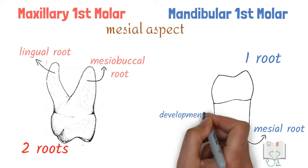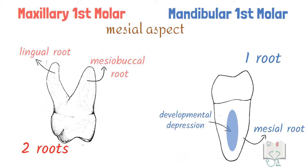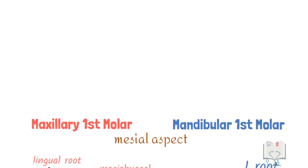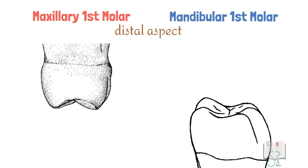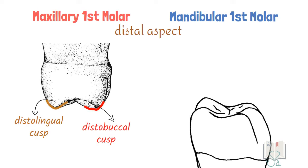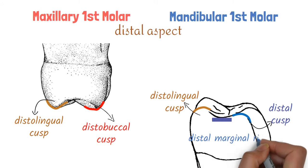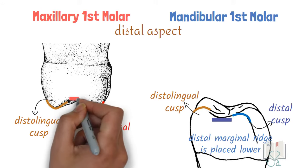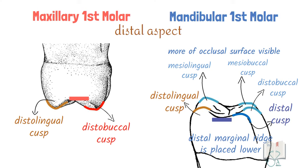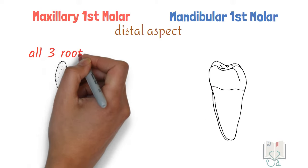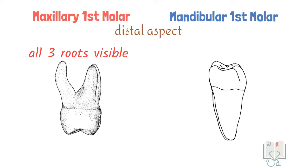In mandibular first molar, a developmental depression is visible on the mesial root, not present in maxillary first molar. Next, the distal aspect. In maxillary first molar, two cusps are visible: the distobuccal cusp and distolingual cusp, whereas in mandibular first molar the two cusps in front are the distolingual cusp and distal cusp. Moreover, in mandibular first molar, since the distal marginal ridge is placed lower, more of the occlusal surface is visible such that all cusps are partially visible — not so in maxillary first molar. In maxillary first molar all three roots can be seen, whereas in mandibular first molar both roots can be seen.